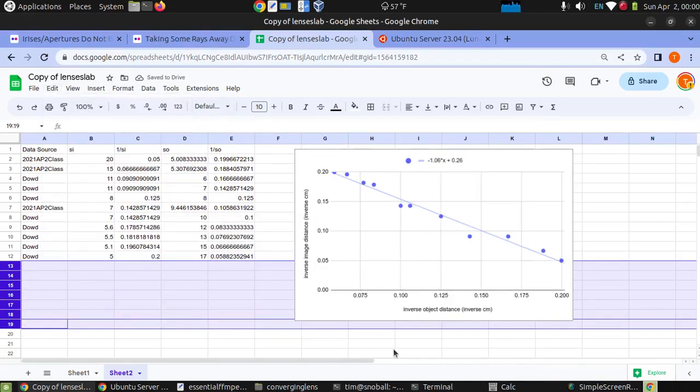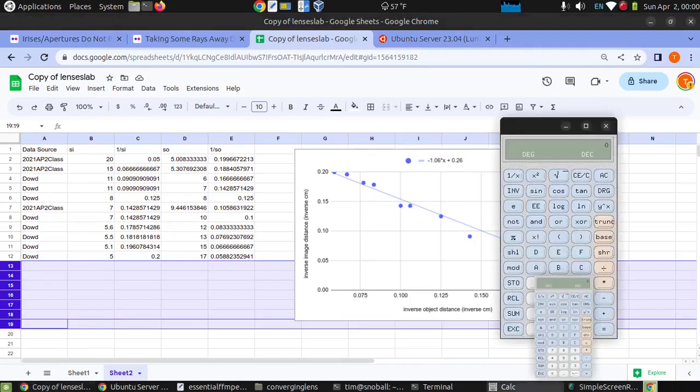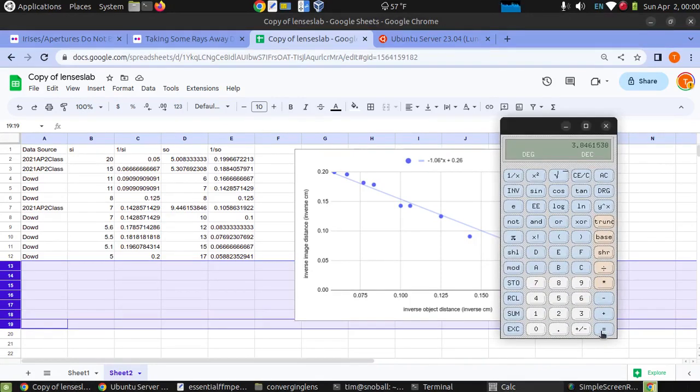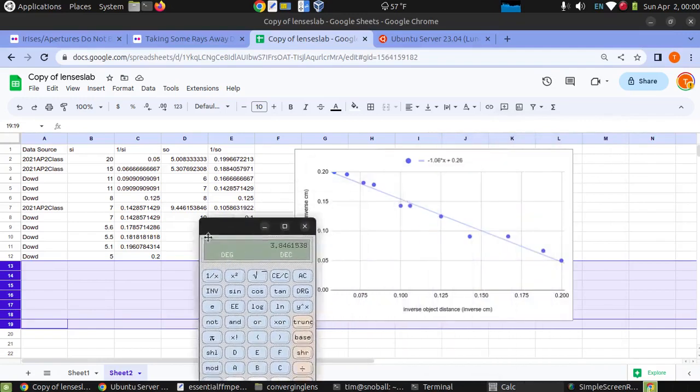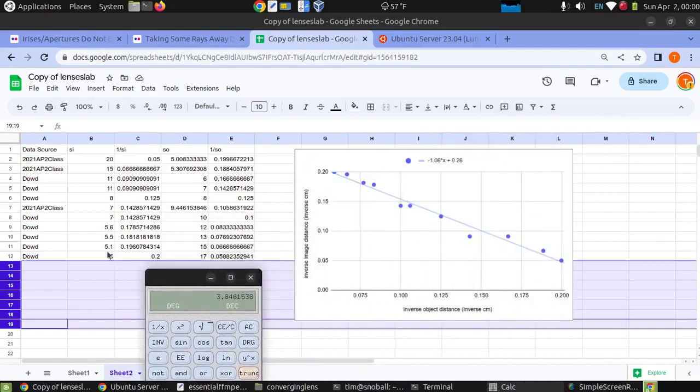And there we go. So we do have a slope of approximately negative one as predicted. And our inverse focal length is 0.26. So one divided by 0.26. So we're calculating a focal length of about four. So that means there is some error in our lab. We were seeing everything kind of converge around five centimeters, but our data, which shows a pretty strong correlation, is suggesting the focal length is about four.